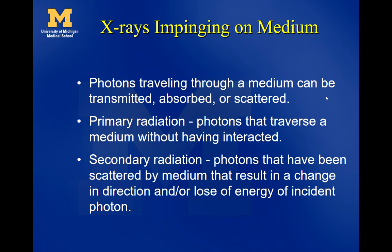Photons traveling through a medium can be transmitted — anytime an x-ray goes past an atom it has a chance of not interacting at all; it can get all the way through a person or a strip of lead. It can be absorbed — pair production and the photoelectric effect absorb x-rays. Or it can be scattered — Compton does scattering, Rayleigh does scattering, things like that.